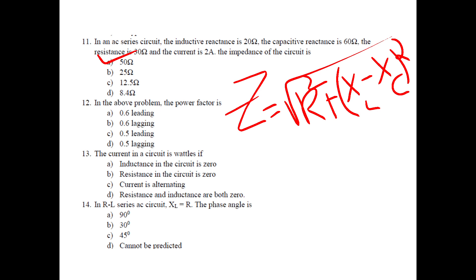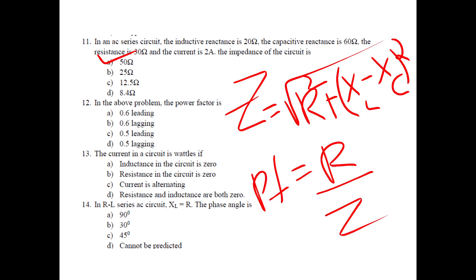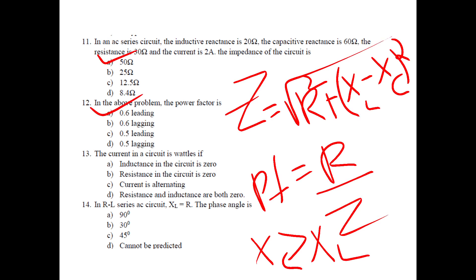The same problem asks for the power factor. The power factor cos φ = R / Z. R value is 30, Z value is 50, so we solve: power factor = 0.6. Since XC is greater than XL, the power factor is 0.6 leading.